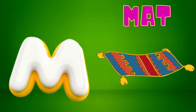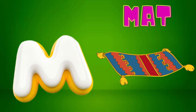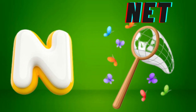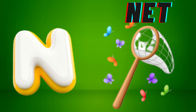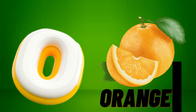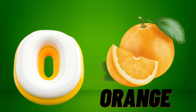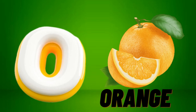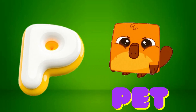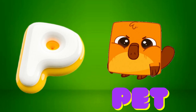M is for Mat, M-M-Mat. N is for Net, N-N-Net. O is for Orange, O-O-Orange. P is for Pet, P-P-Pet.